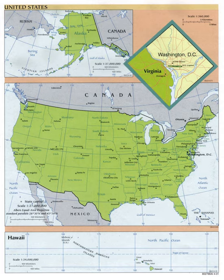The primary first-level political division of the United States is the state. There are 50 states, which are bound together in a union with each other. Each state holds governmental jurisdiction over a defined geographic territory, and shares its sovereignty with the United States federal government. According to numerous decisions of the United States Supreme Court, the 50 individual states and the United States as a whole are each sovereign jurisdictions.